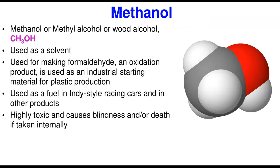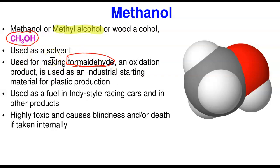Methanol is the first one we'll talk about. Methanol is also called methyl alcohol; its formula is CH₃OH. It is commonly used as a solvent — it dissolves polar solutes — and also used in making formaldehyde. Oxidation of a primary alcohol gives formaldehyde, and further oxidation gives carboxylic acid. Formaldehyde is used as an industrial starting material for plastic production.